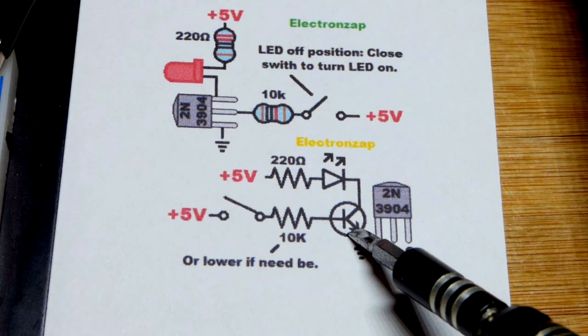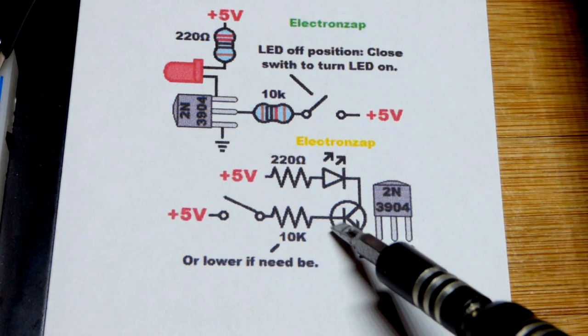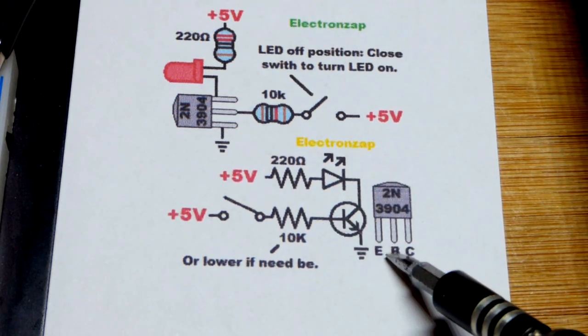The emitter on the schematic symbol is the arrow right there. The base is the bar right there.